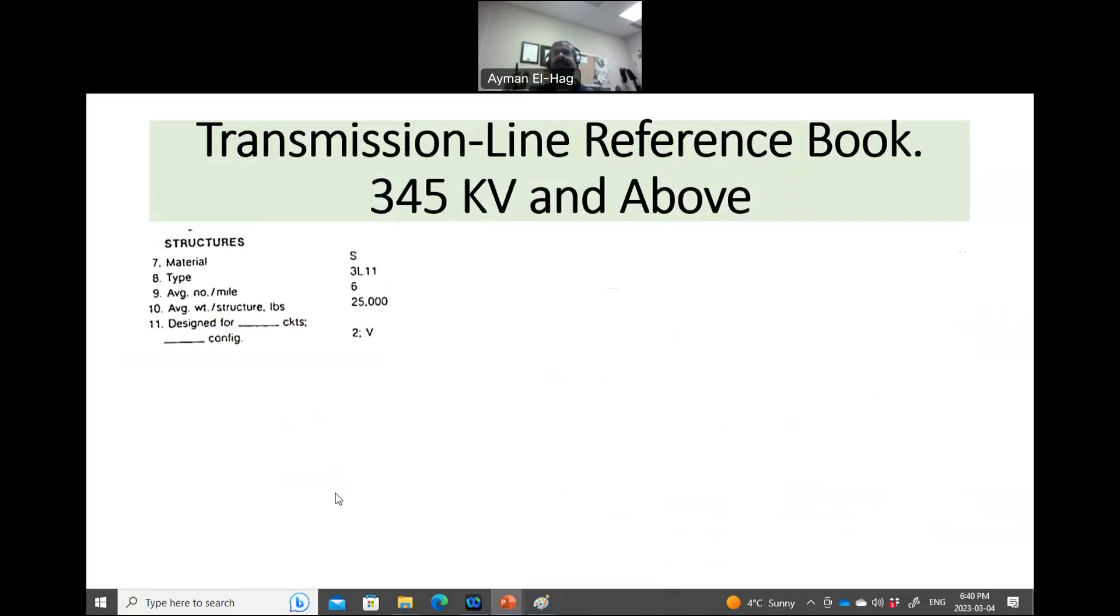Now, let's talk about the first thing, which is the tower, the structure. And here it gives you some information. This is the material, S, which means it's steel, the type 3L11. Now, 3L11 has a certain structure, and this is the 3L11. Average number per mile, this is how many towers you will have every mile. And this is something about the weight. And then here it says designed for 2, and then you have C here, V. So this 2 is the number of circuits.